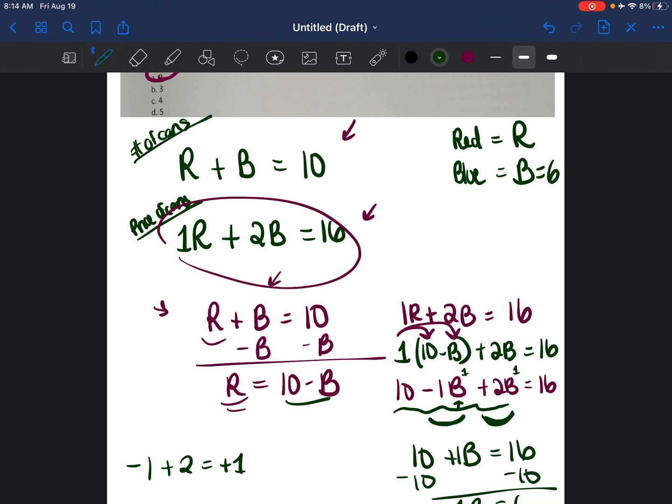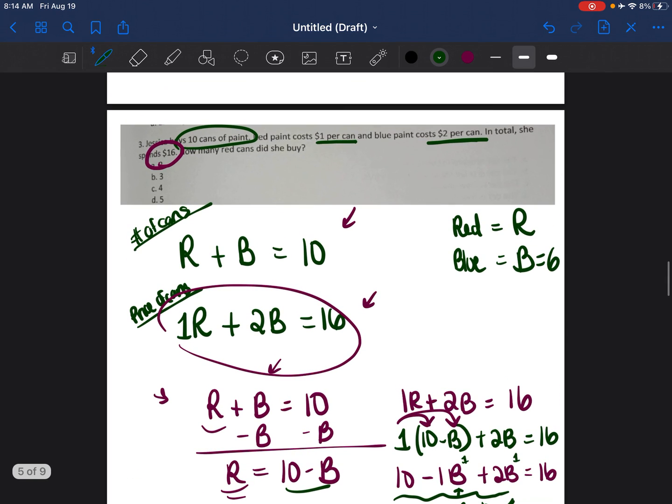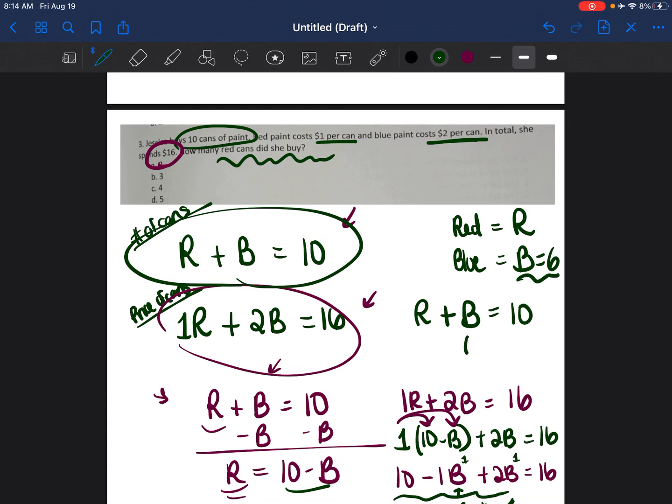So I already know that I purchased 6 cans of blue paint. Now the question wants to know how many red cans did I buy. So I'm going to go back to this first equation. The number of cans I buy red plus the number of cans that are blue equal 10. So if I now know that I bought 6 cans of blue paint, I can easily figure out how many cans of red paint did I buy. You can just look at that and say 4 plus 6 equals 10. So R is equal to 4. And so my answer is going to be C. R is equal to 4.